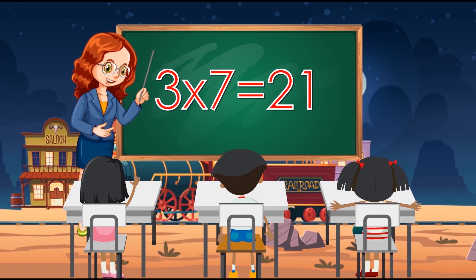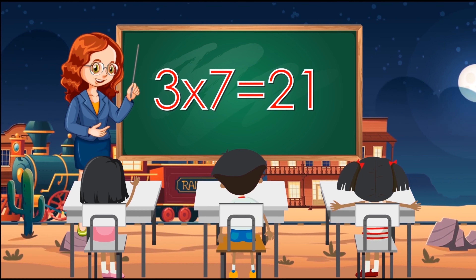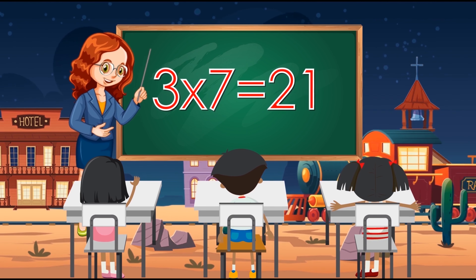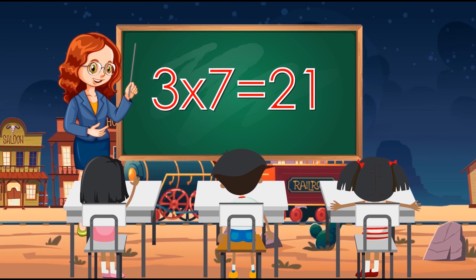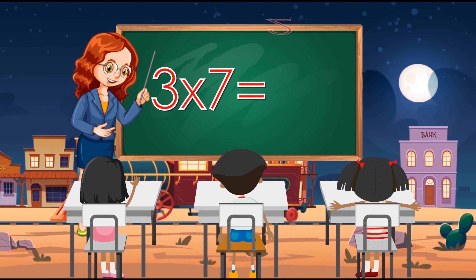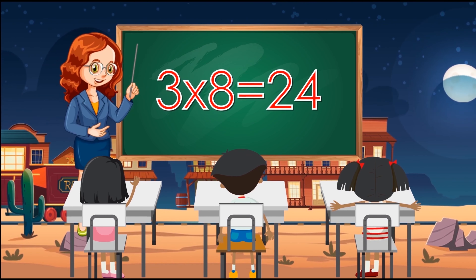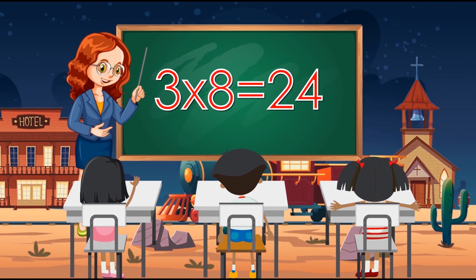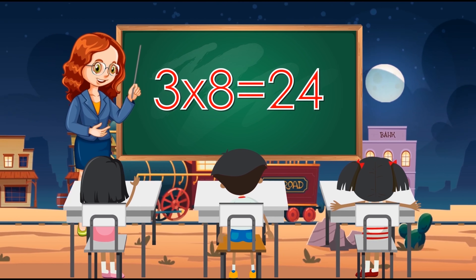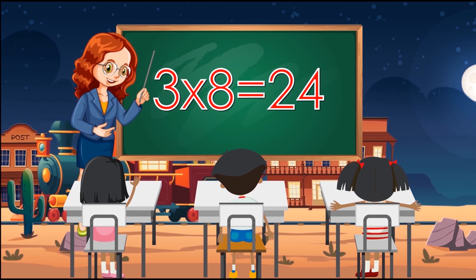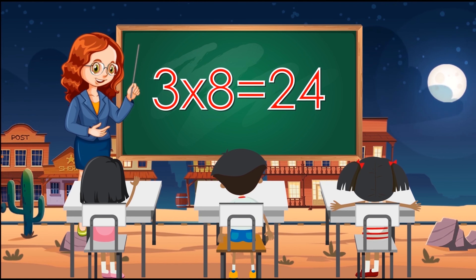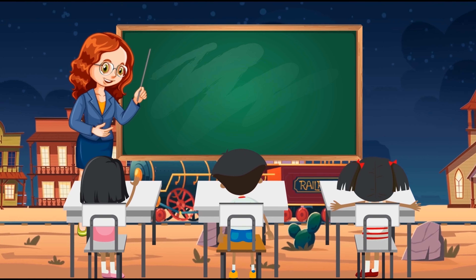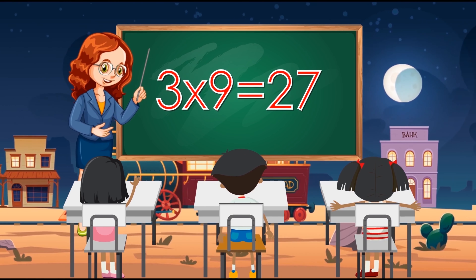3 times 7 equals 21. 3 times 8 equals 24.